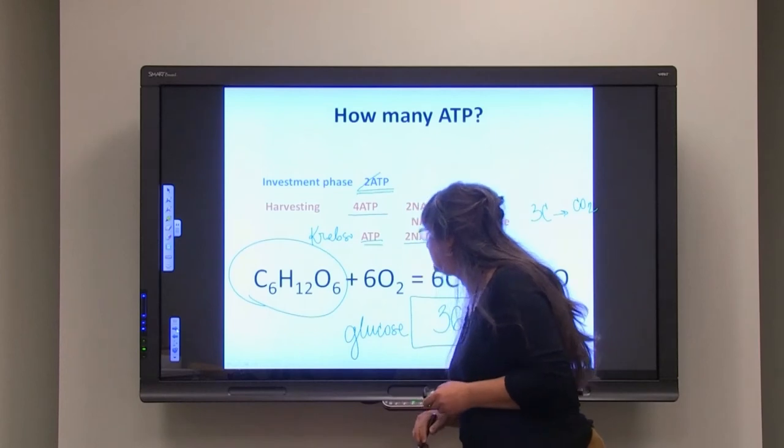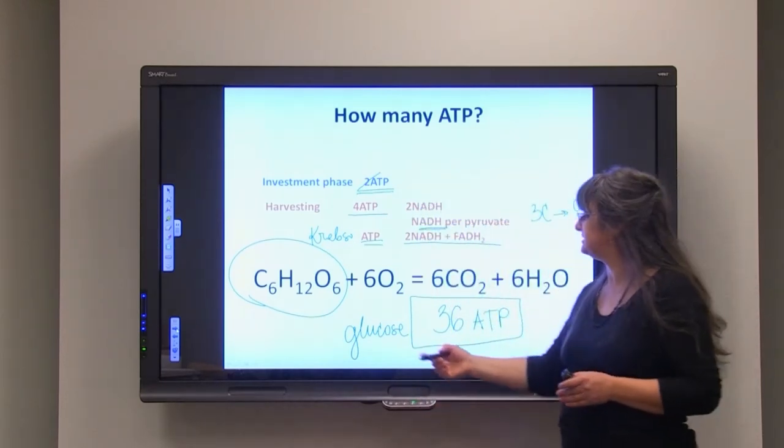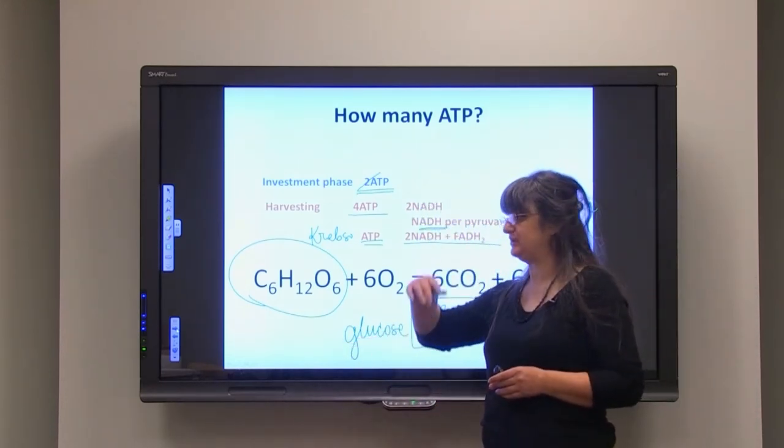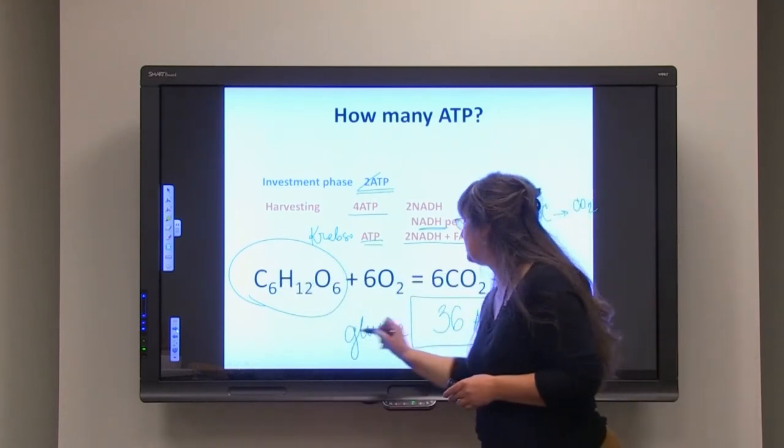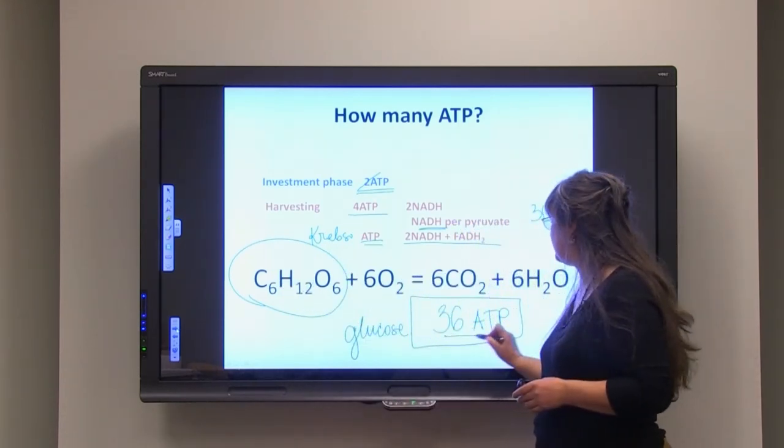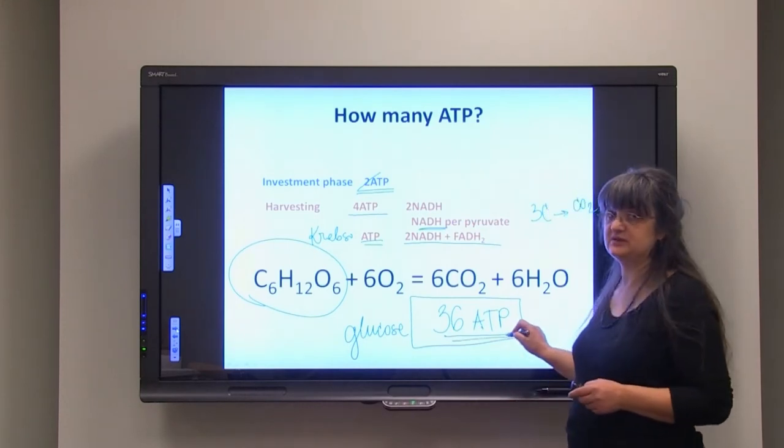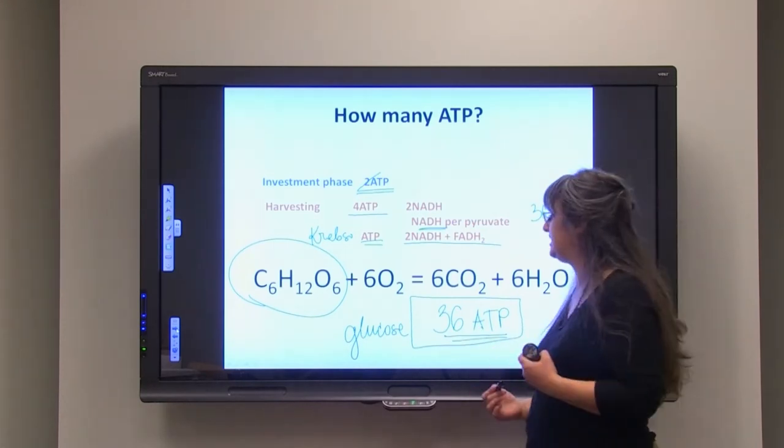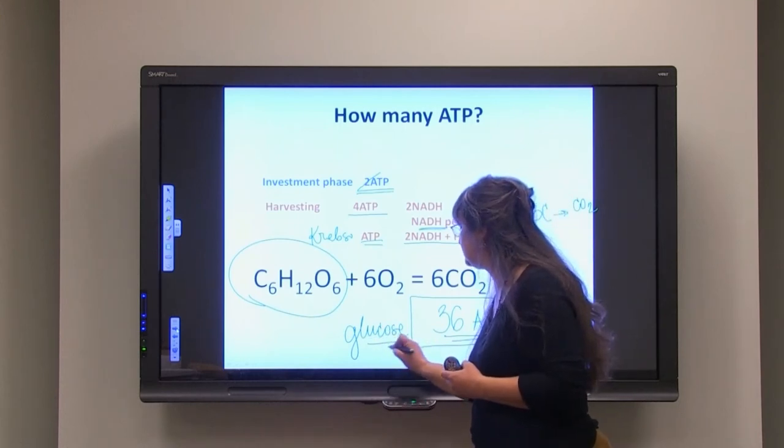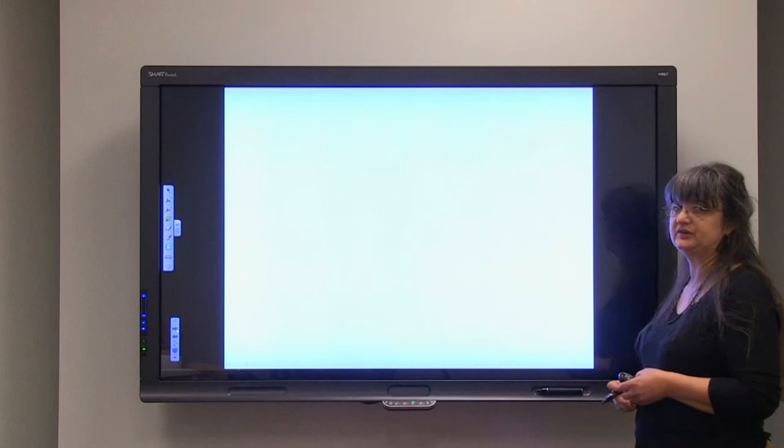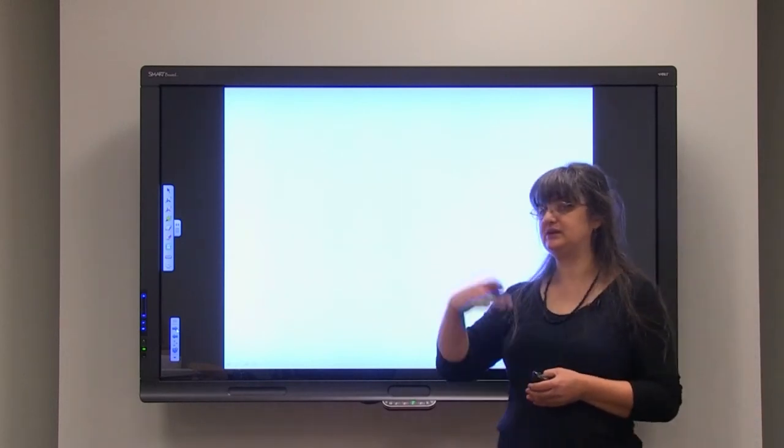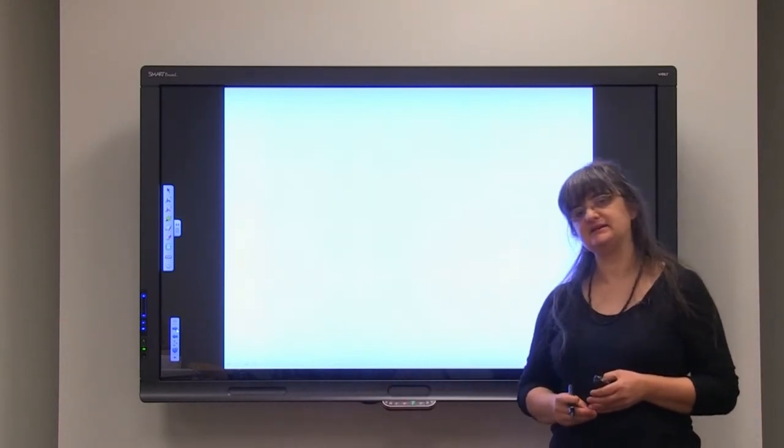Again, the number really depends whether it's glucose entering or whether we have fatty acids and so forth. And if you remember from Krebs cycle, this number of ATP molecules can be huge depending on what was the original input in the cellular respiration. We'll talk more about what happens when the oxygen is not present in the next session.